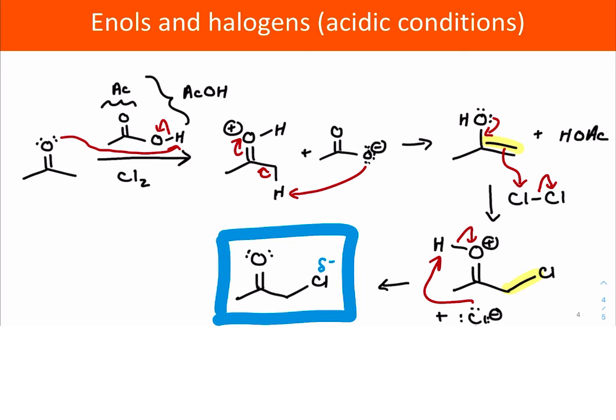electron density in the oxygen is being pulled away from the oxygen atom and toward the chlorine, and that's making the electron density more spread out and making the oxygen atom more stable or less basic. And so it's going to be much less likely to react with a new proton source.